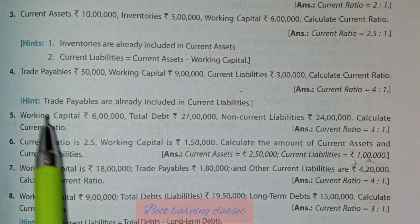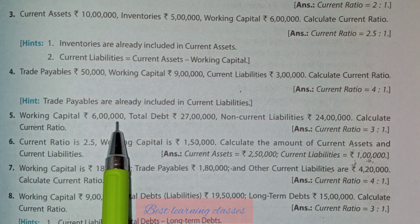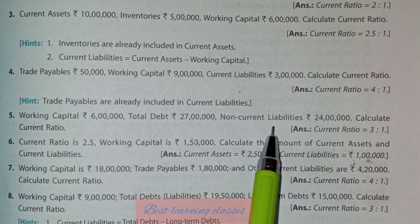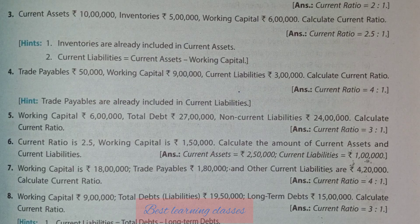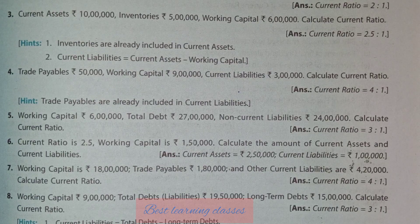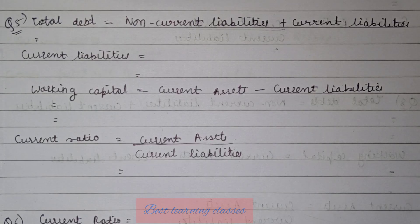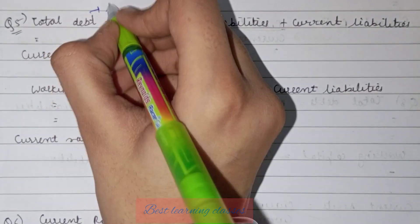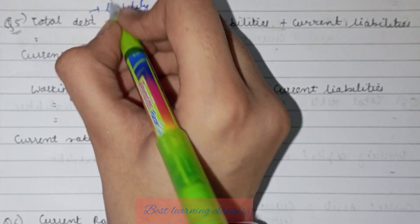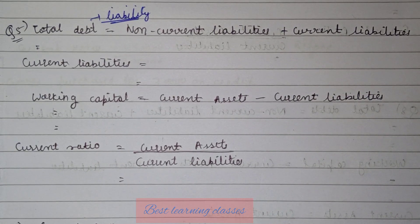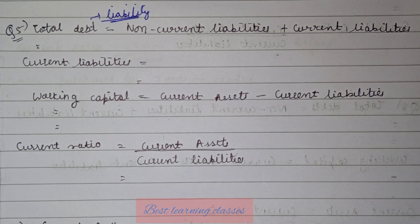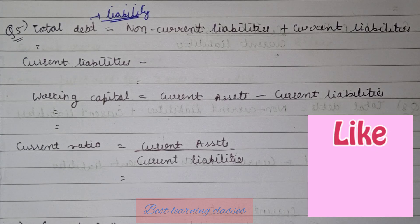Question number 5: working capital is given, total debt is given, non-current liabilities are given. This question is very confusing because nothing directly ratio-related seems given. Remember: debt means liability. So total debt = total liabilities. In total liabilities, there are current liabilities and non-current liabilities. So current liabilities = total debt minus non-current liabilities.